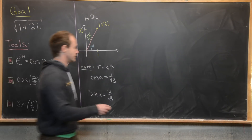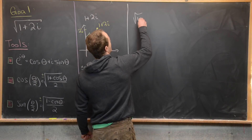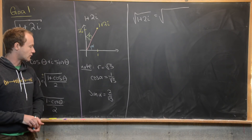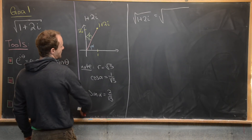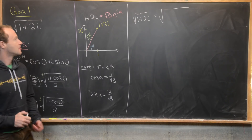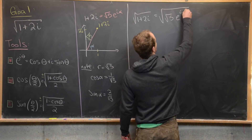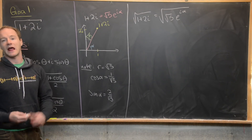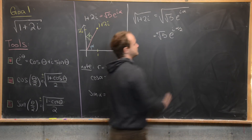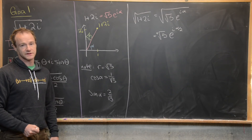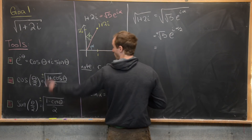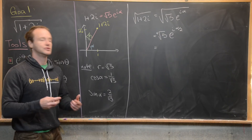Now let's calculate our goal square root. We take the square root of 1 plus 2i and rewrite 1 plus 2i using its polar representation. By our discussion, that is equal to the square root of (root five times e to the i alpha). Using rules involving square roots and exponents, we break this up into the fourth root of five times e to the i alpha over 2, since the square root of a product becomes the product of square roots, and the square root of the square root is the fourth root.